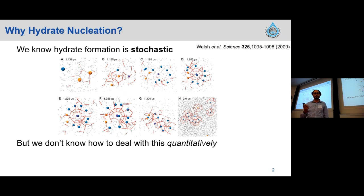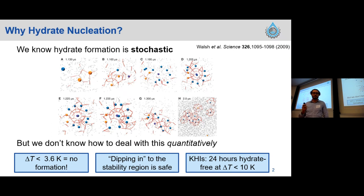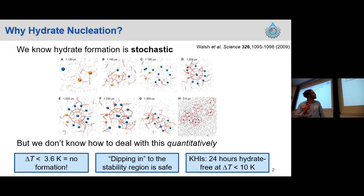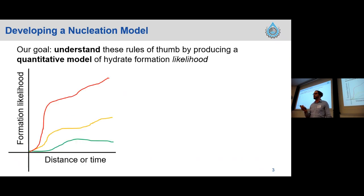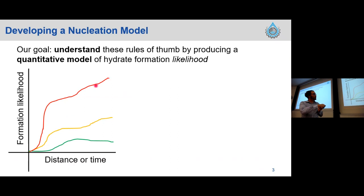We know we have this problem but we don't actually know how to deal with it quantitatively. There are lots of industrial heuristics — things like: if the subcooling is less than 3.6 Kelvin we won't have hydrate formation, that dipping into the equilibrium region is safe, or the CARRE charts give us 10 hours of hydrate-free production at subcooling less than 10 Kelvin. These are qualitative statements. What we want to look at is where these actually come from. We're developing a hydrate nucleation model — essentially translating rules of thumb into actual quantitative mathematics. The output looks like a formation likelihood on the vertical axis as a function of distance or time, comparing different assets or management strategies.